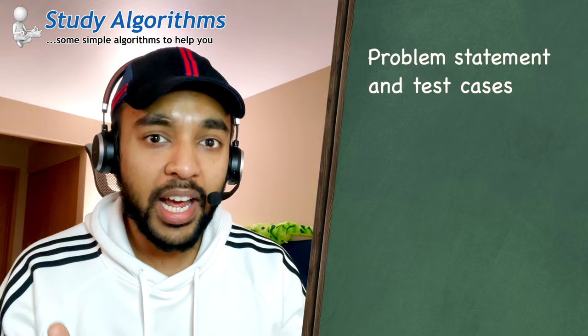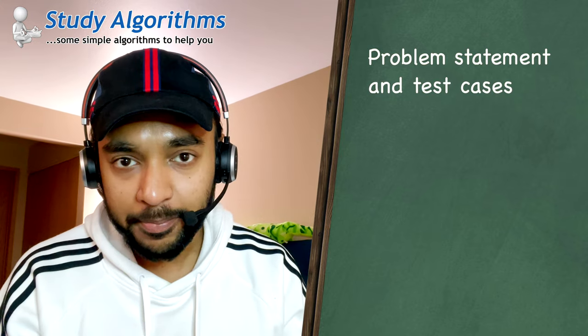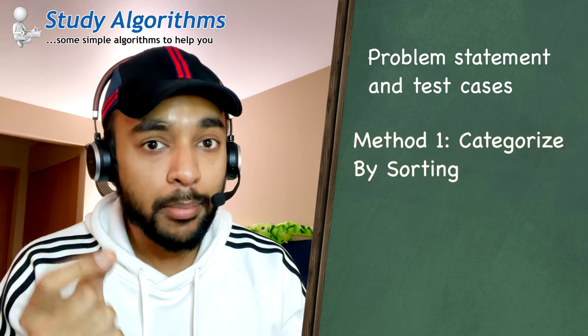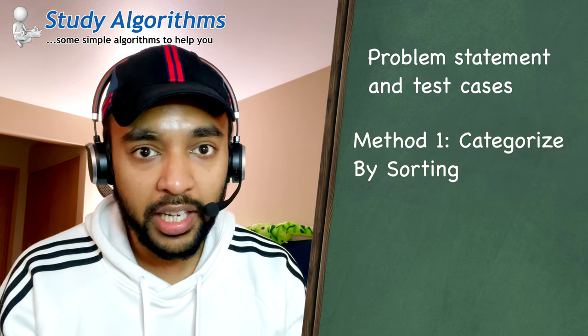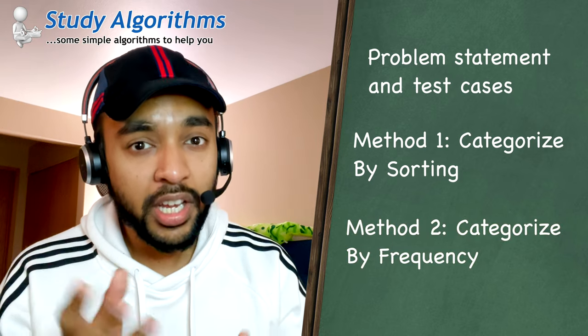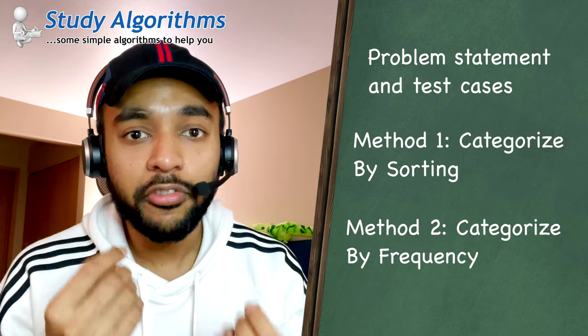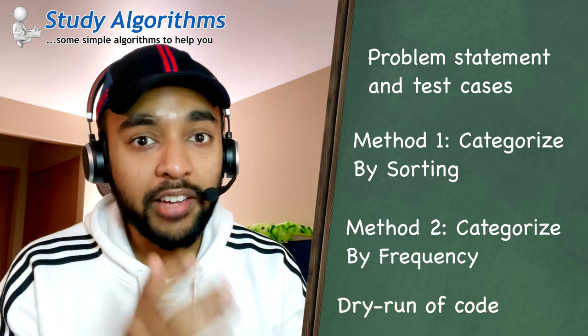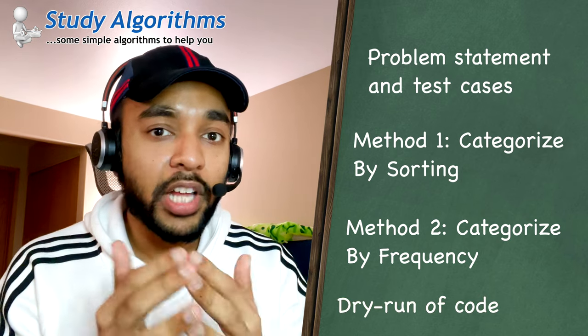First, I will describe the problem statement and show you some sample test cases. Then, we will try to solve this problem by categorizing using sorting. I will also show you a second solution where you can categorize using the frequency of characters. Going forward, I will do a dry run of the code so that you can see how all of this actually works. So, without further ado, let's get started.